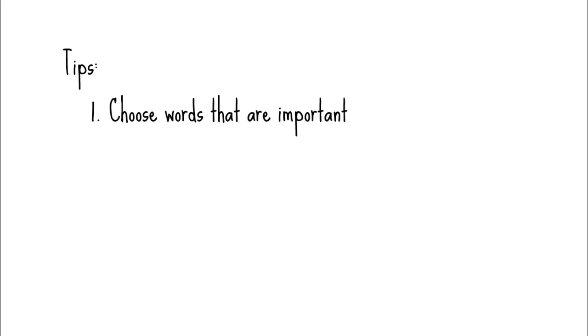Here are a few tips to make Mind's Eye work well for you. First, choose words that are important to the text. Avoid words that are likely to cause predictions that are way off base. The point is to help them make good quality predictions. Also, choose mostly sensory words — words that will evoke strong imagery, sense, or emotion.